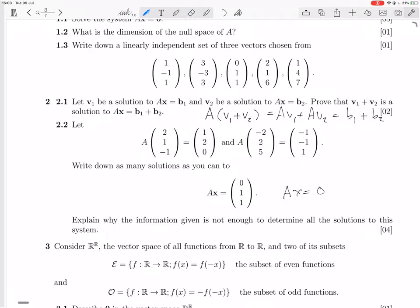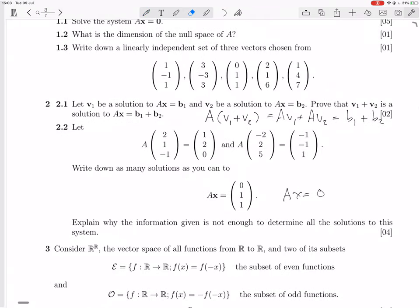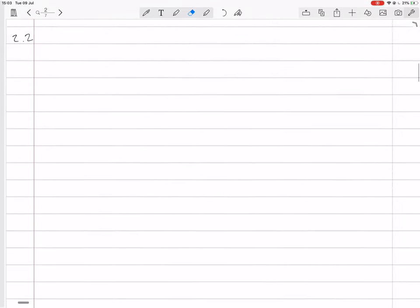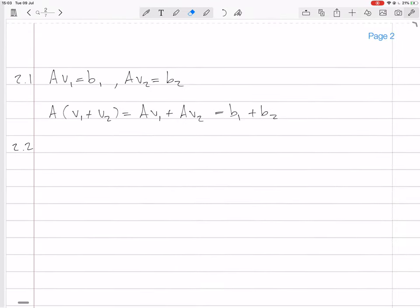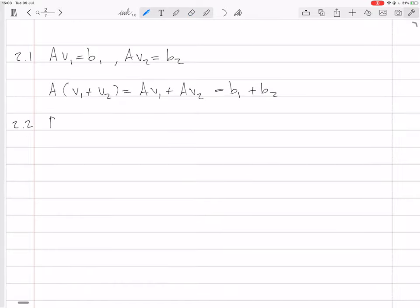So we just want to add (2, 1, -1) to (-2, 2, 5), right? Actually, let me just say, by 2.1, we know that the sum of those two vectors solves.